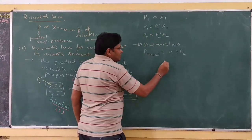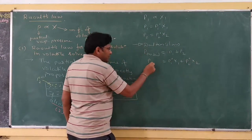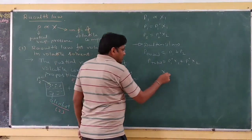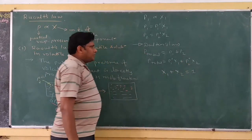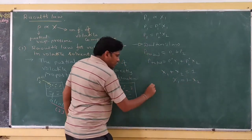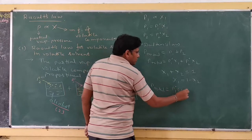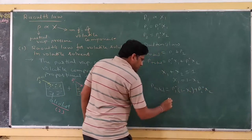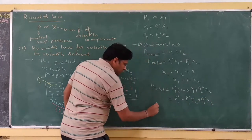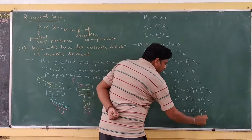We know that P1 equals P1°x1 and P2 equals P2°x2, so P total equals P1°x1 plus P2°x2. Since the sum of mole fractions x1 plus x2 equals 1, we substitute x1 equals 1 minus x2. Therefore, P total equals P1°(1 minus x2) plus P2°x2, which simplifies to P total equals P1° plus (P2° minus P1°)x2.